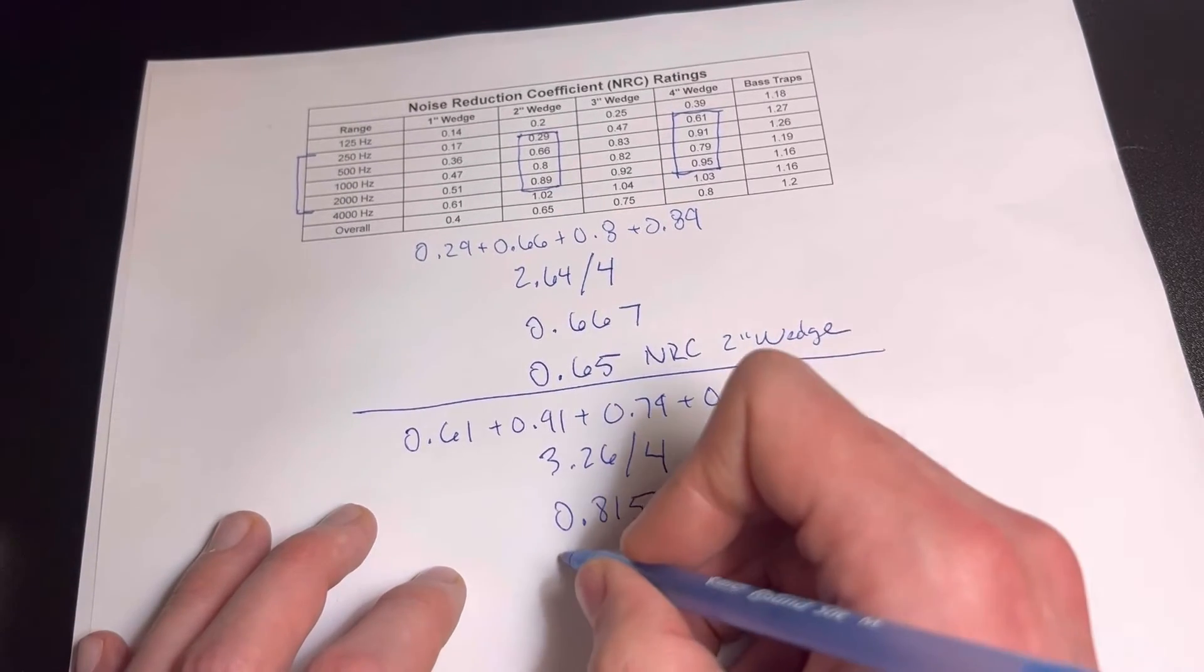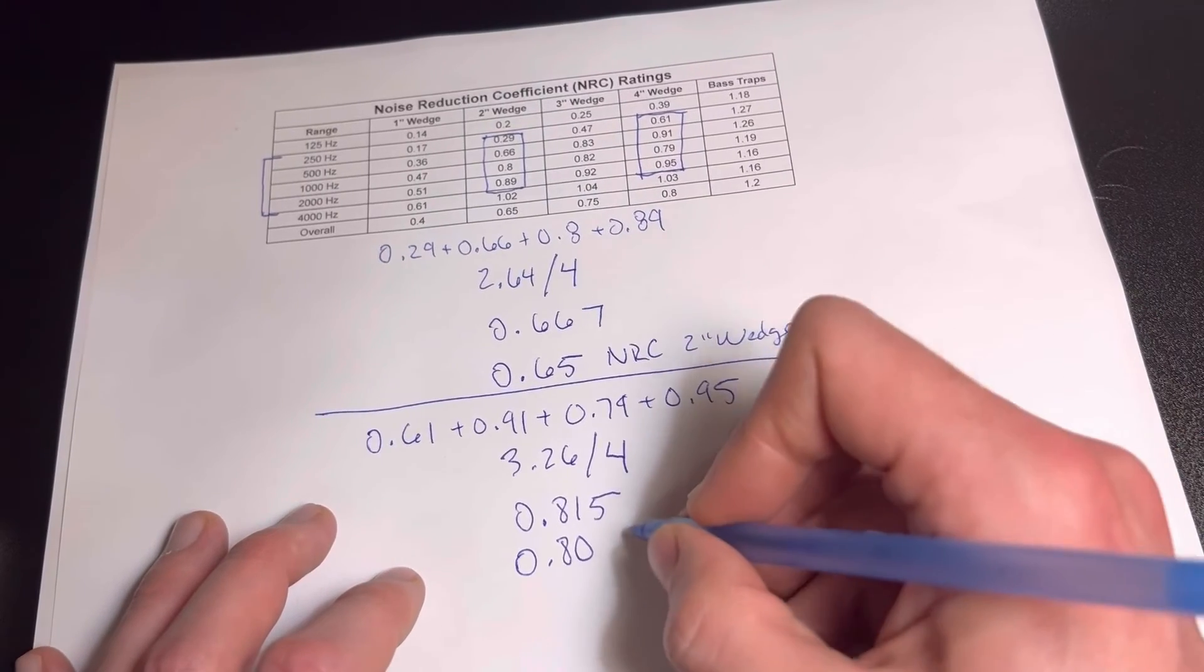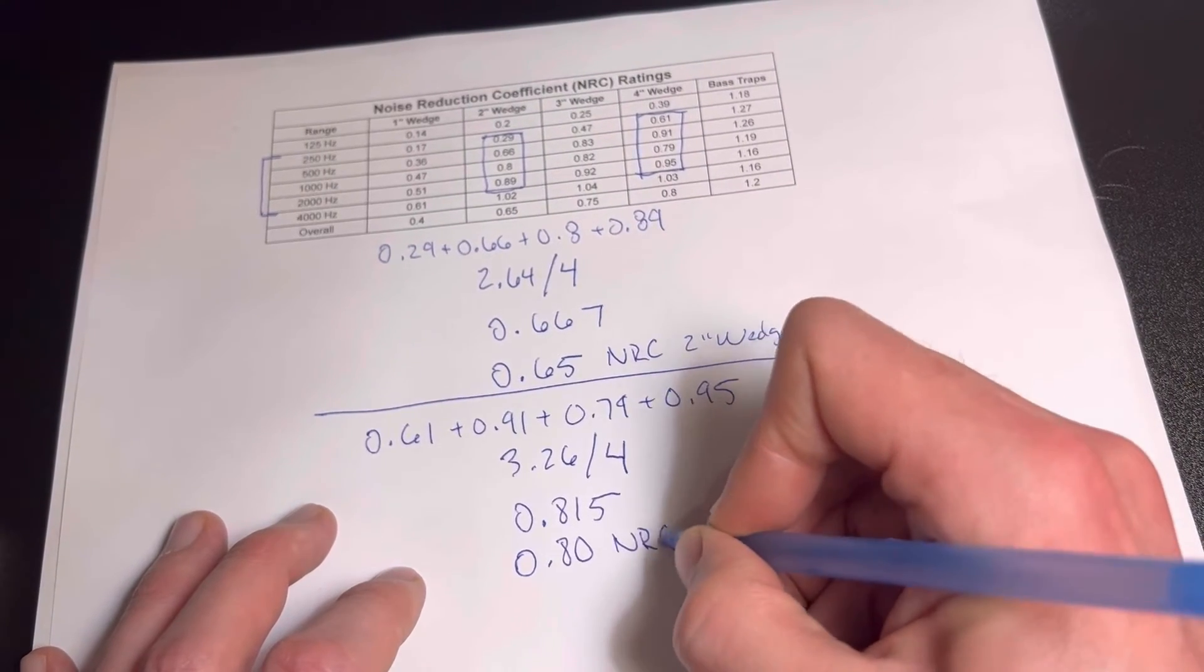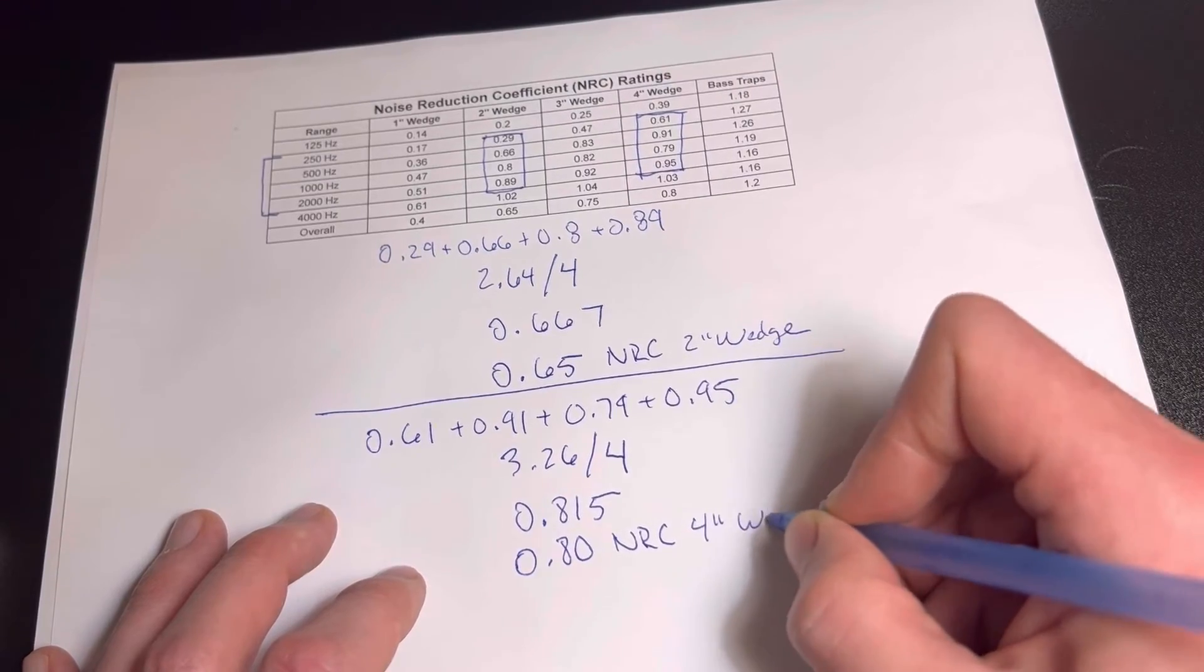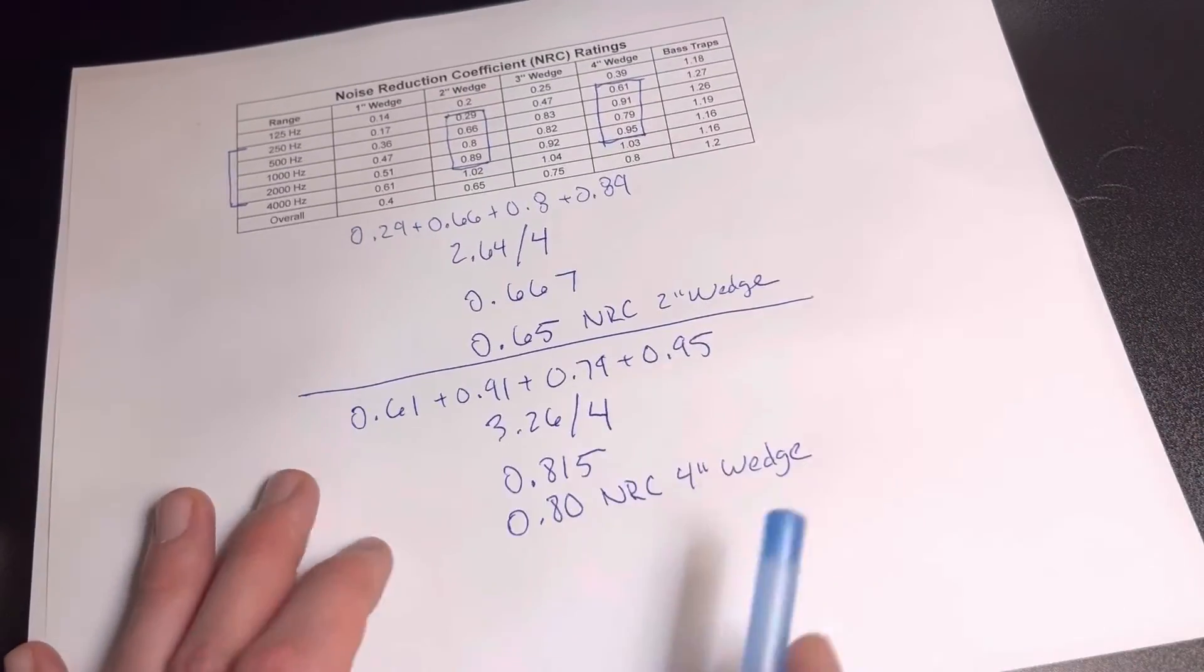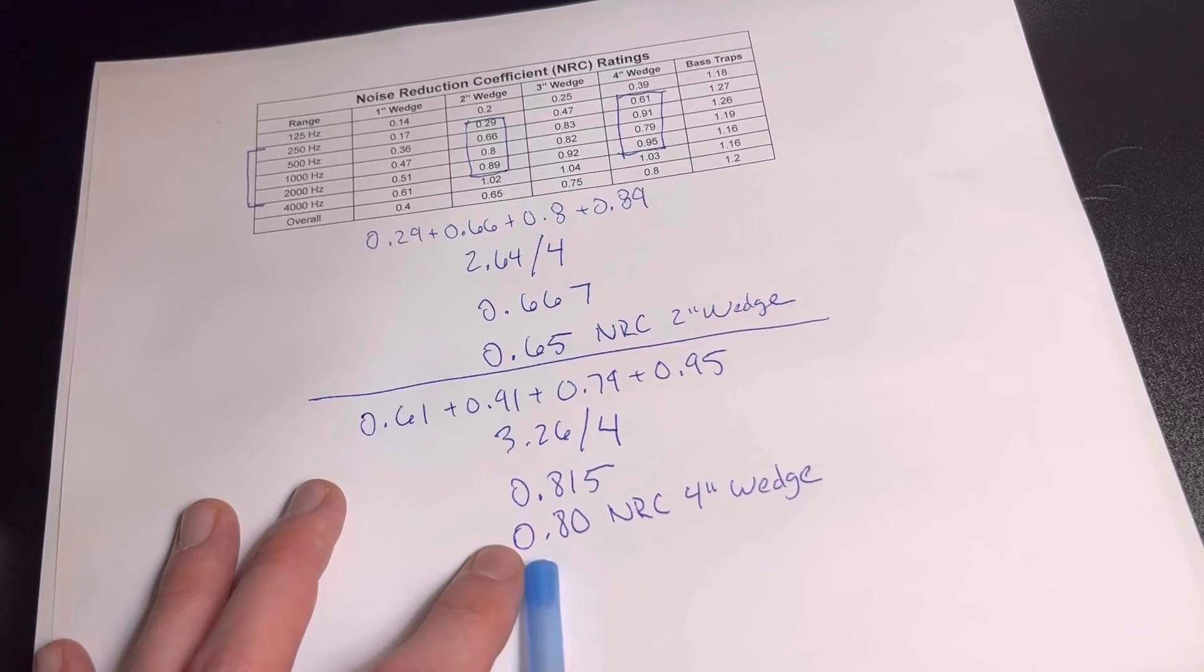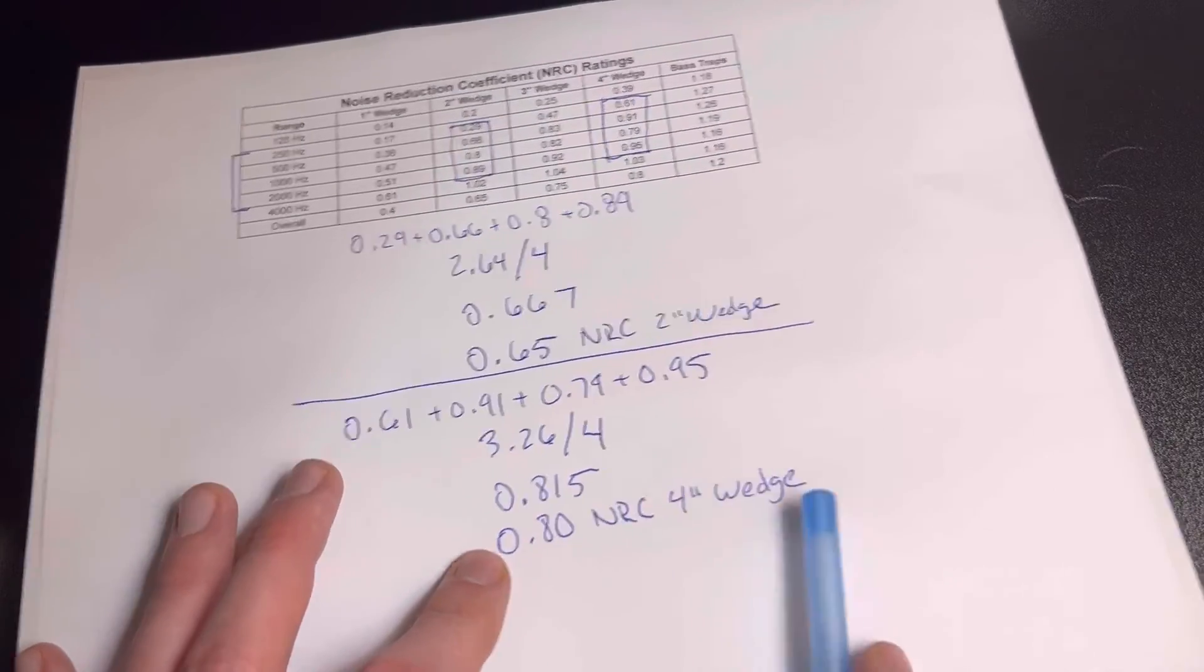It's going to be 0.815. I'm going to round that down to 0.80 for our NRC of the four inch wedge. And then we can say that the four inch wedge is going to absorb about 80% of the noise.